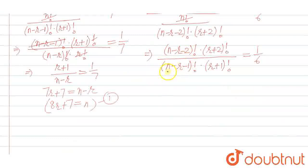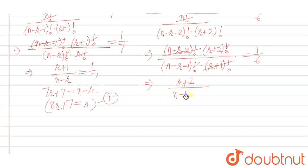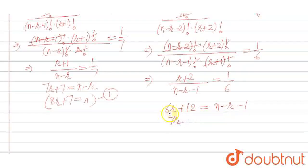Here, (n−r−1)! and (n−r−2)! differ by one term, and similarly (r+2)! divided by (r+1)! simplifies. This gives us (r+2) in the numerator and (n−r−1) in the denominator, equal to 1/6. So 6r+12 = n−r−1, which gives us 7r+13 = n. This is our second equation.